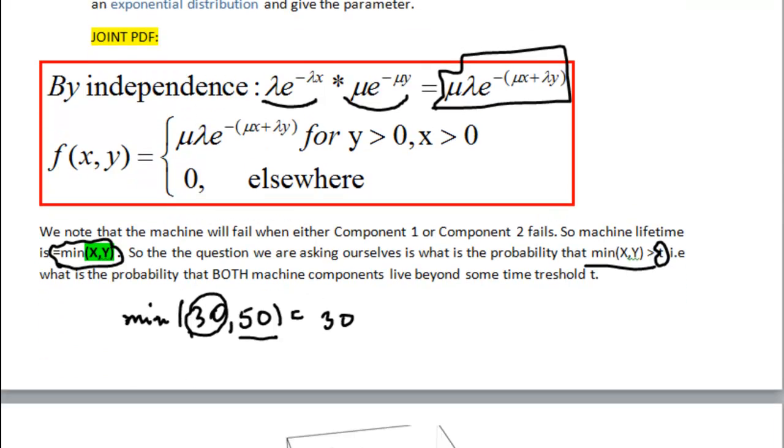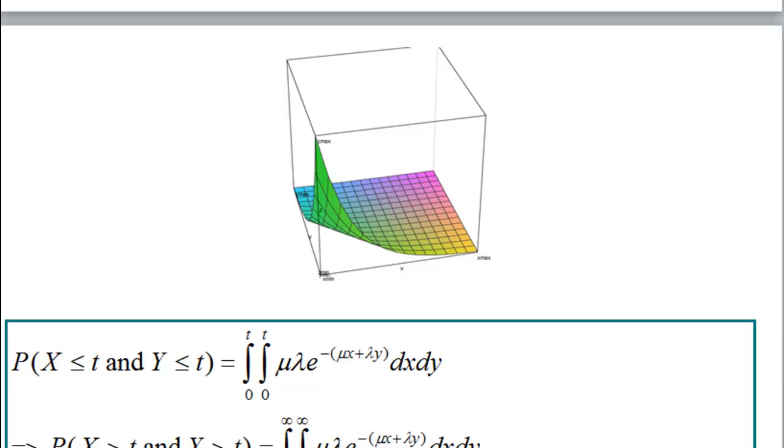Okay, so it turns out that if we were to graph our probability density function, we will get something like this. And visually, so say I choose my t to be somewhere here in the middle. Visually, we are interested in integrating anything that's from t to infinity in both directions, both for the lifetime of X and lifetime of Y. So when we perform the integration, we are not interested in anything that's before t. We just want to know what was the probability that our machine will survive after time t, for both components, component Y and component X.